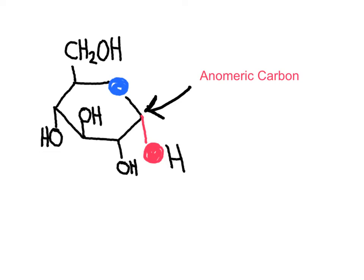Enzymes catalyze the formation of the cyclic hemiacetal because the carbonyl is a flat 120-degree structure. The OH from carbon number 5 can approach from the top of the overall plane or from the bottom, producing two different anomers.